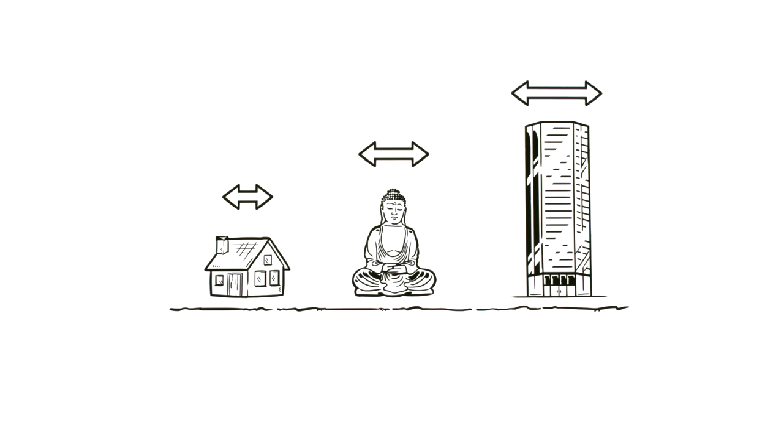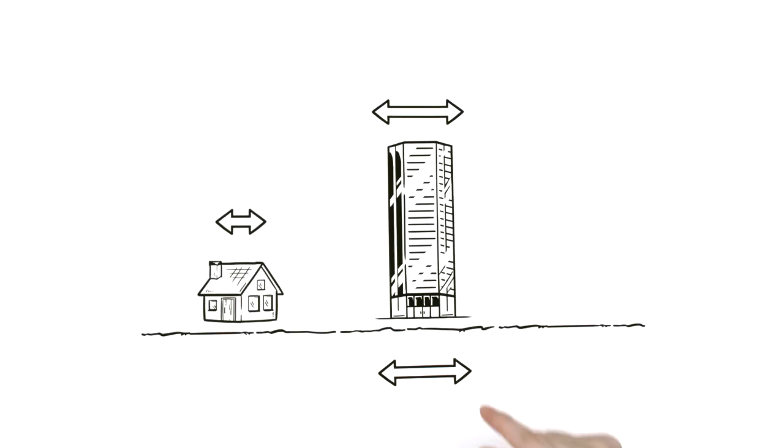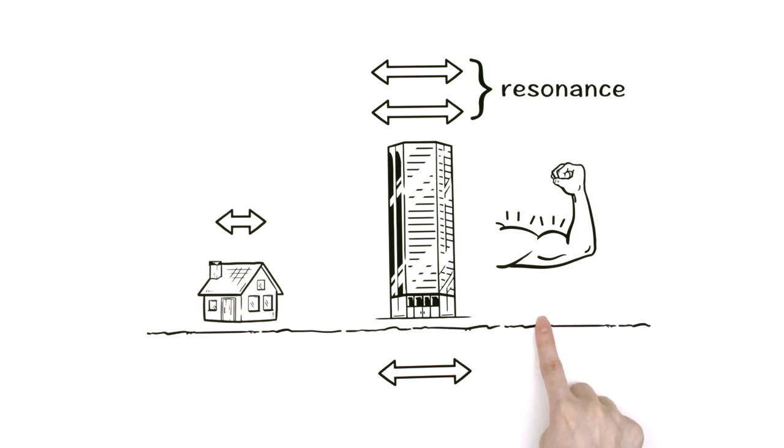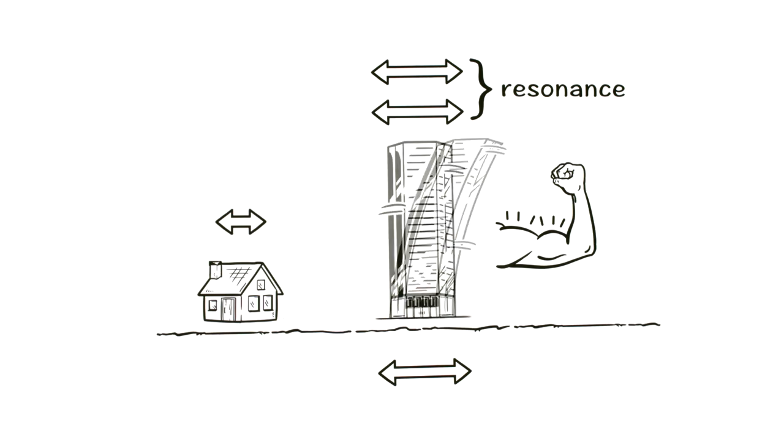Each building has its own period, which depends on the type of construction and height. Higher buildings have longer periods, and these are more likely to be the same as the ground motion. When a building's period is the same as that of the ground, this causes resonance, which greatly magnifies the shaking. That's why, even though the ground outside is only moving slightly, a tall building might be shaking violently.